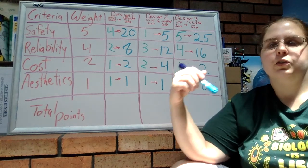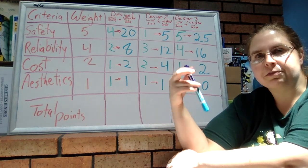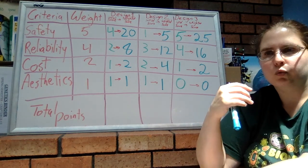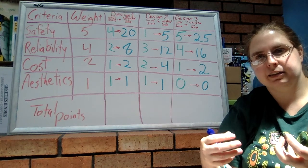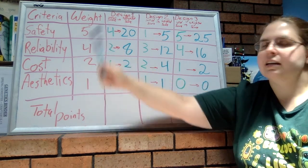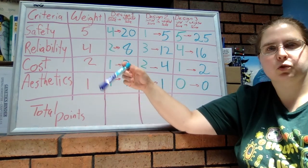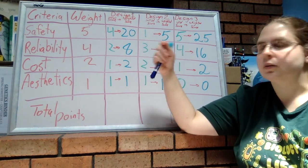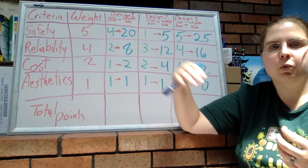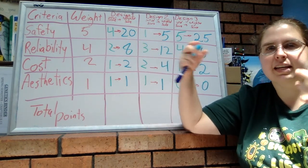Now the reason why we want to do this—why we want to multiply our initial score by the weight—is so that we can reflect the fact that some things are more important and thus should have a larger impact on the overall score. So since safety we value as the most important factor, it has the highest weight. That means when we multiply the initial score by the weight, it shows that we put more value on it.